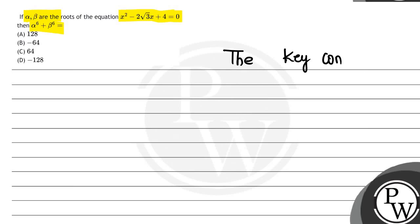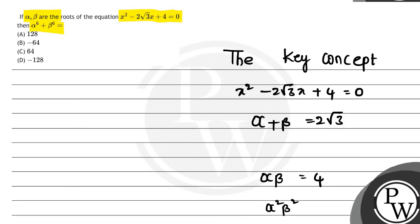The key concept to solve this problem is using the quadratic equation formulas. Sum of the roots α + β = -B/A = 2√3, and product of the roots αβ = C/A = 4.